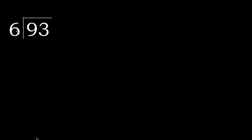93 divided by 6. 9 is not less, so we work with 9. 6 multiplied by which number is nearest to 9 but not greater? 6 multiplied by 2 is 12 — that is greater. 6 multiplied by 1 is 6, which is not greater. So 9 minus 6 is 3.